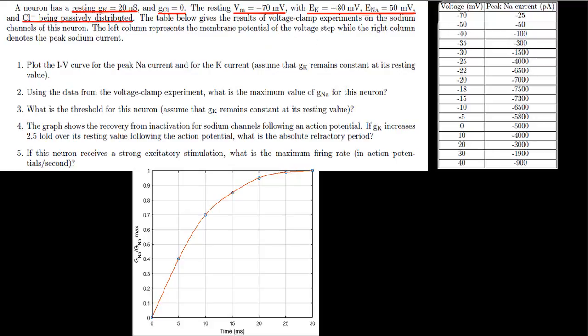Notice how I'm underlining the important bits of the problem — this will help you focus on important details for problem solving. There's also a table given for results of a voltage clamp experiment on the sodium channels of the neuron. For each voltage the neuron was clamped at, the sodium current was measured, and the table summarizes the results.